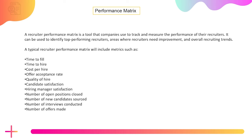Cost per hire is how much money was spent on hiring one person. Offer acceptance rate tracks how many offers were rolled out, how many were rejected, and how many were accepted. This ratio gives an average of how many offers were rolled out versus how many were accepted.